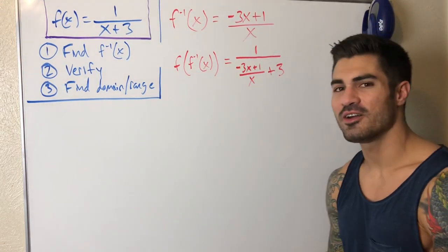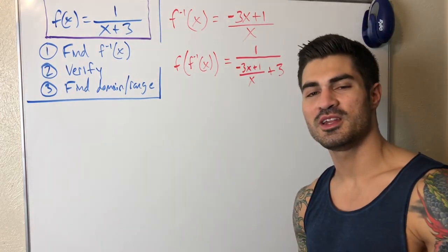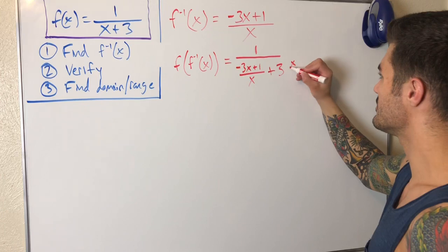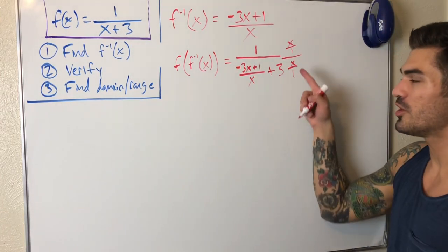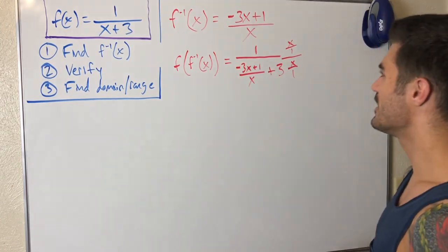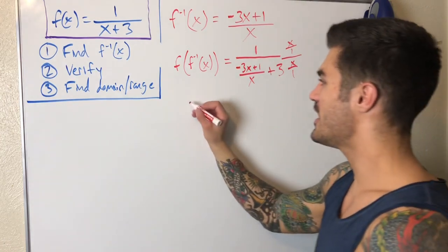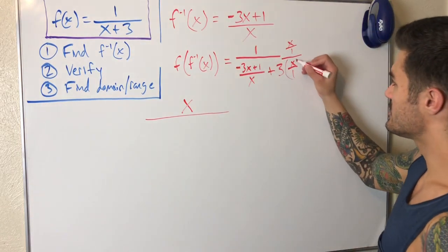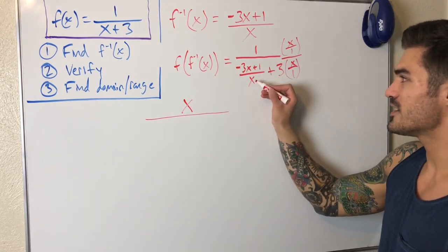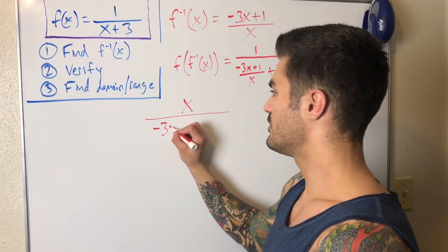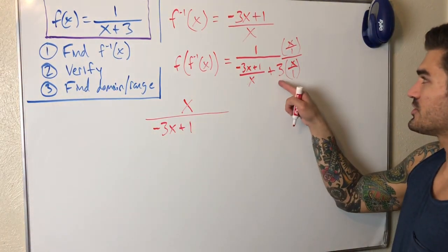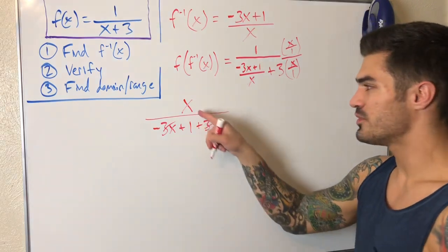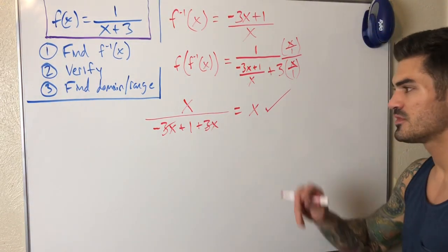From here it's just algebra. I'll multiply by x/1 over x/1 to clear the denominator. On top that gives me x. On the bottom, distributing x: x times (-3x+1)/x gives -3x + 1, and then plus 3 times x gives +3x. Simplifying: -3x + 3x cancels, leaving x over 1, which is just x.